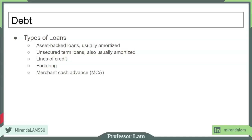Something similar to factoring is merchant cash advance. A merchant cash advance is similar in structure to a payday loan — it's like a payday loan for a business. As you saw on the graph earlier, banks are the number one provider of loans to most businesses. A lot of banks also work with the SBA. If you're able to get an SBA guarantee, you can borrow at a lower rate than you could without one, making it a valuable resource.